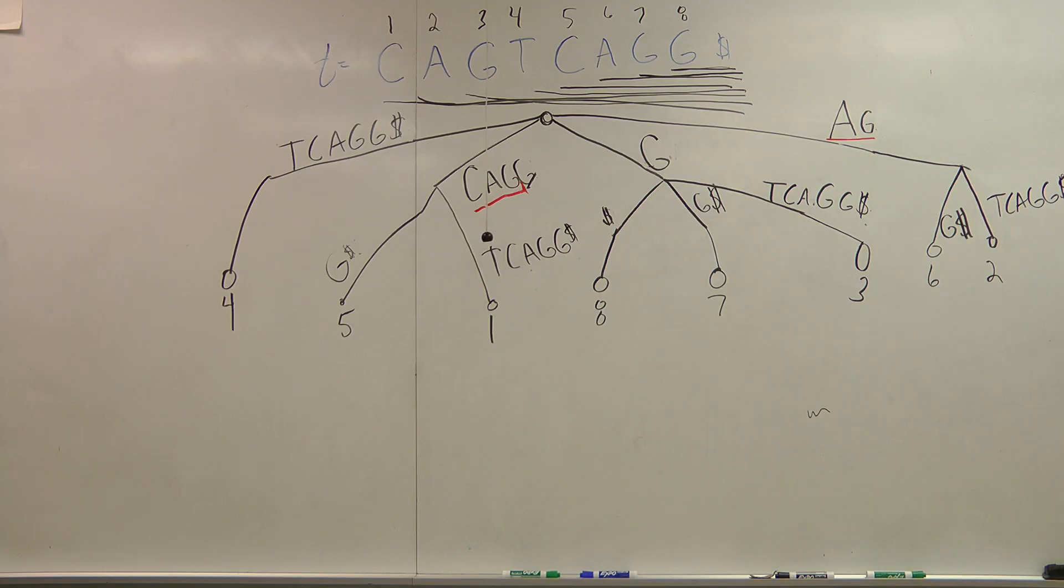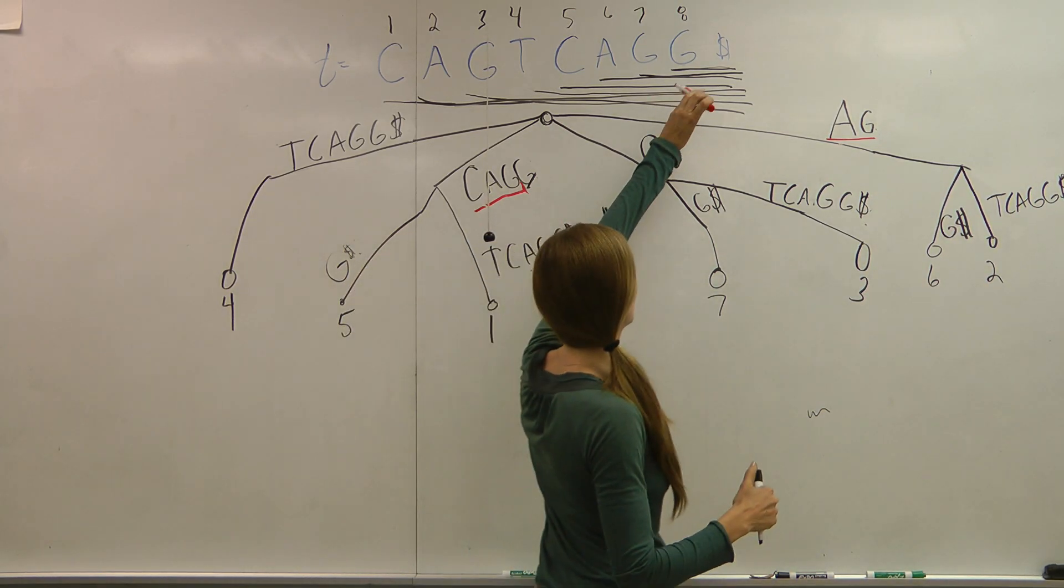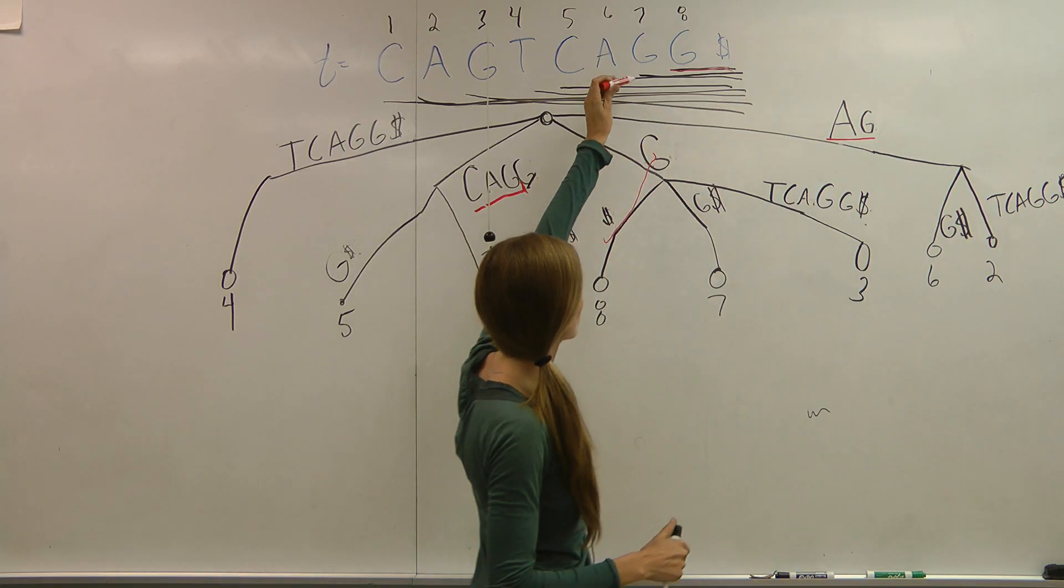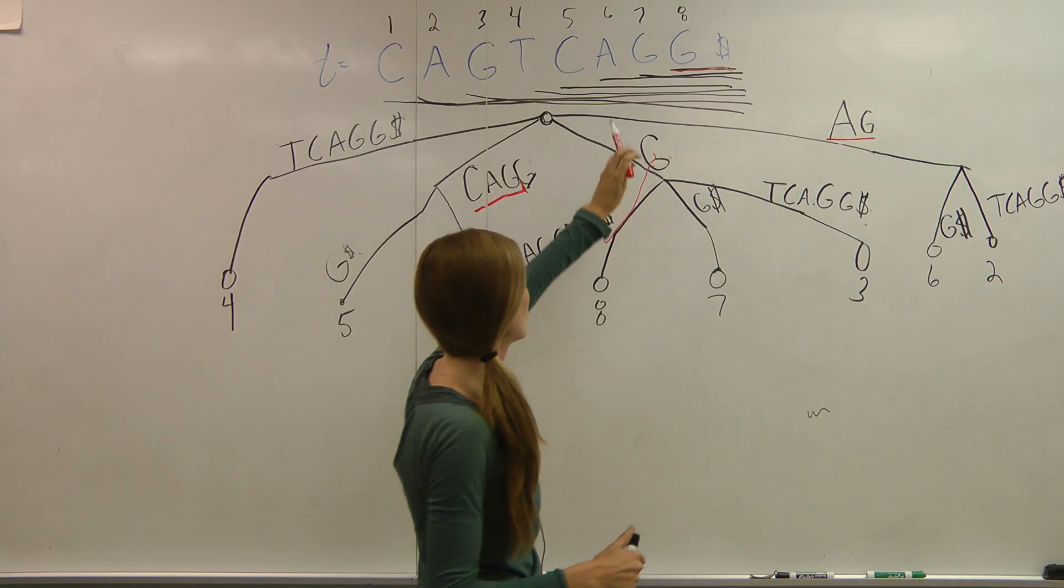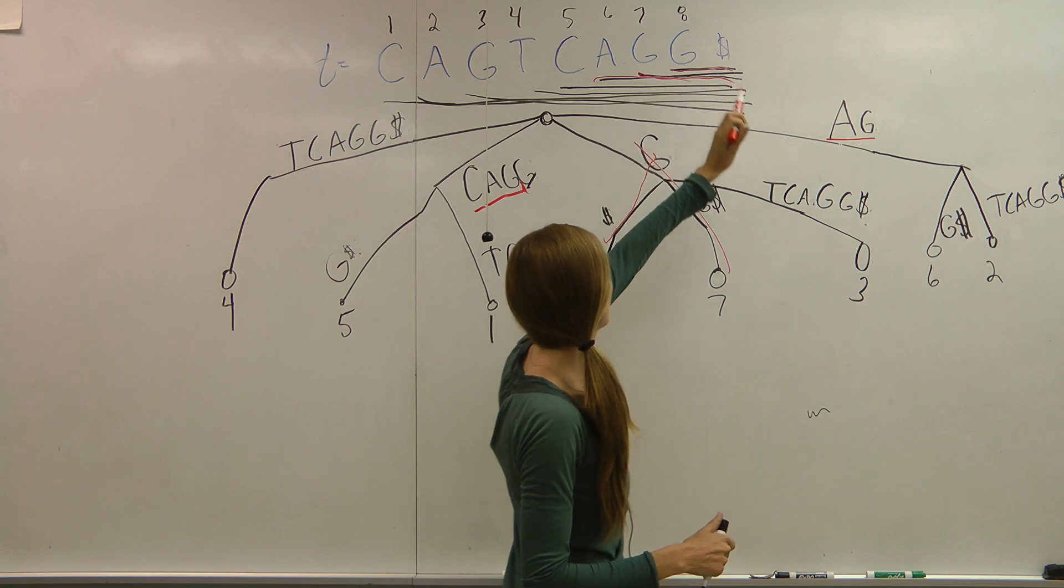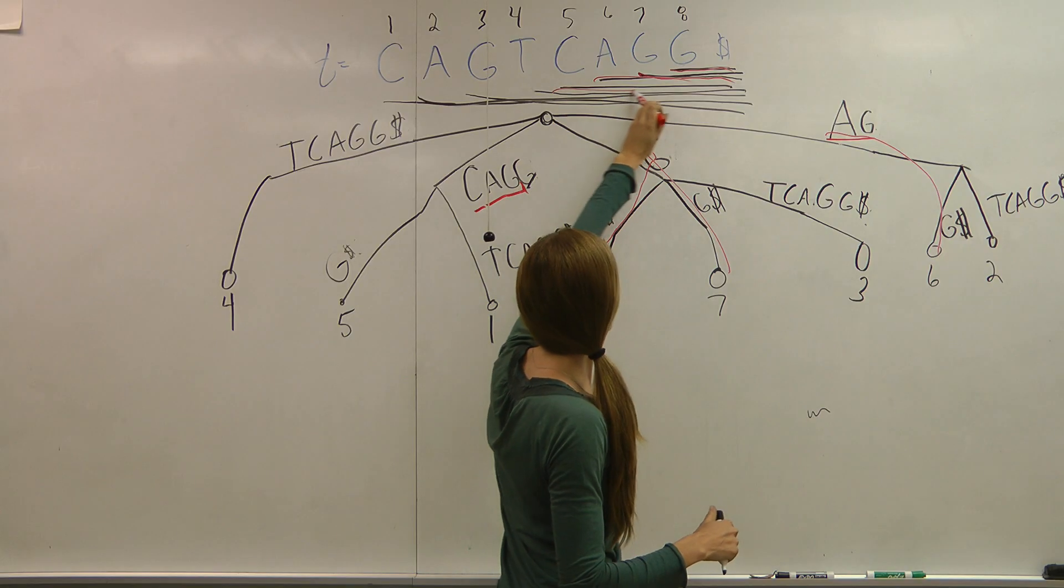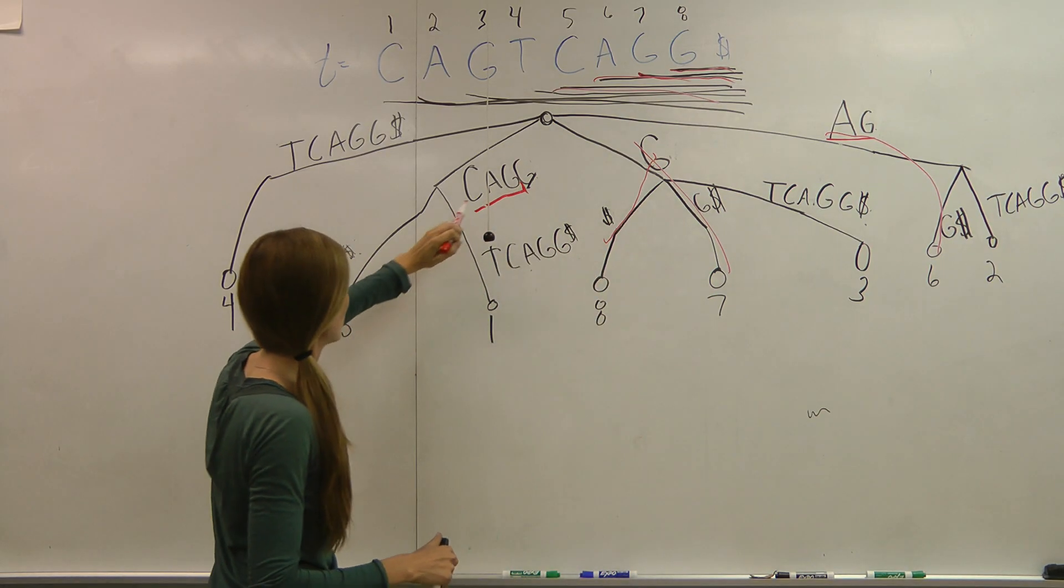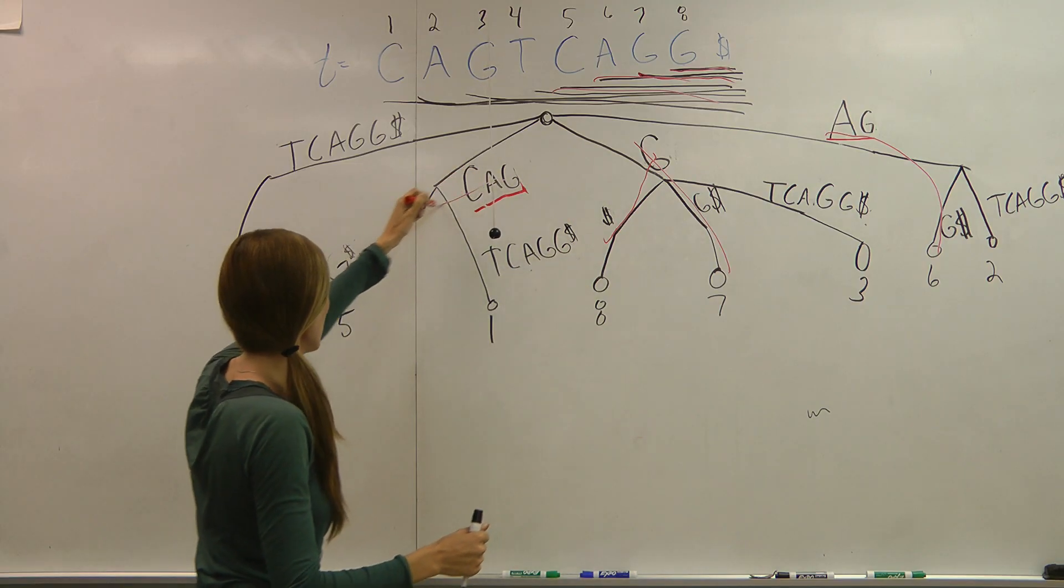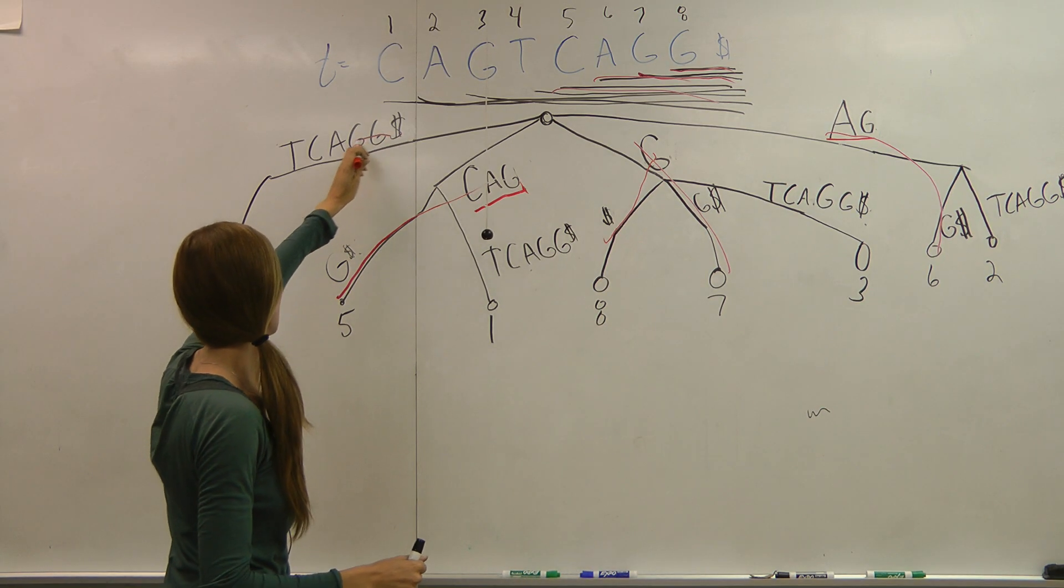And then you can double check your tree to make sure that you got all the prefixes. You start here. Do I have G represented? Yes. Here's G. Do I have G-G represented? Yes. Do I have A-G-G represented? A-G-G, yep. Do I have C-A-G-G represented? Yep. Do I have T-C-A-G?